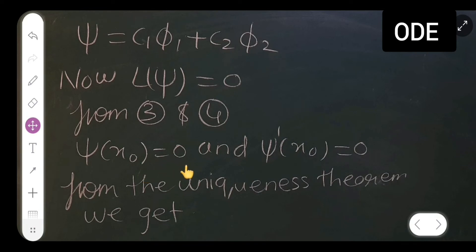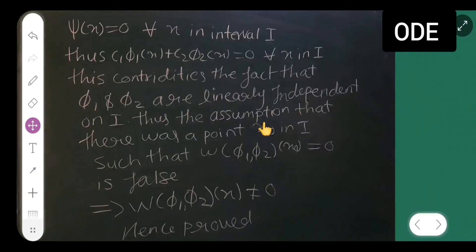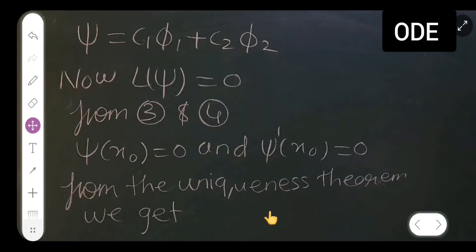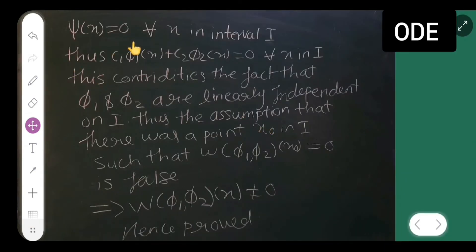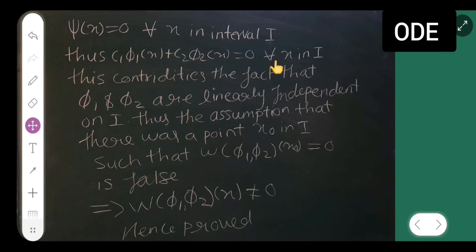From equations (3) and (4), we get psi(x₀) = 0 and psi'(x₀) = 0. By the uniqueness theorem, it follows that psi(x) = 0 for all x in interval I.